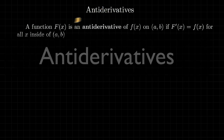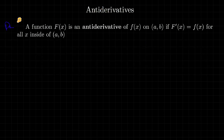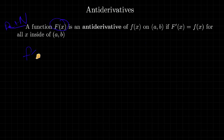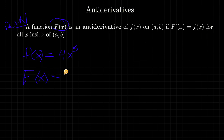We're going to take a look at antiderivatives. The definition: a function capital F(x) is an antiderivative of f(x) on an interval if F'(x) is equal to f(x). Basically, you've got a function — I'll give you a simple example, f(x) = x³ — and we say that capital F(x) is an antiderivative of little f(x) if its derivative equals that function.